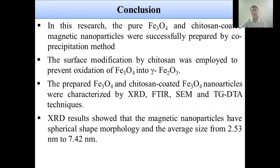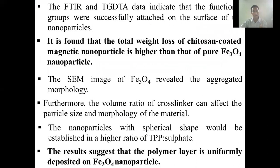In conclusion, the pure Fe3O4 and CS-MNC magnetic nanoparticles were fully prepared by a specific method. The surface modification by CS-MNC was applied to prepare stable Fe3O4. The prepared nanoparticles were characterized. The results show that the magnetic nanoparticles have spherical shape morphology with particle size from 2.53 to 7.42 nanometers. The FTIR and TGA/DTG data indicate that functional groups were successfully attached on the surface of the nanoparticles. The CS coating of Fe3O4 prevents aggregate morphology, and the volume ratio of cross-linking agent can affect the particle size and morphology. Nanoparticles with spherical shape are established at a high ratio of TPP.